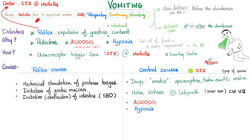Recall that the medulla has four important centers: heart and lungs, get it in, get it out. We talked about swallowing before — where was the center? It was in the medulla. How about vomiting? It's also in the medulla.